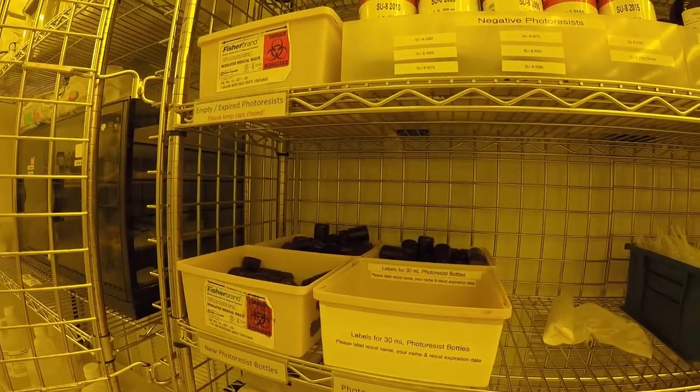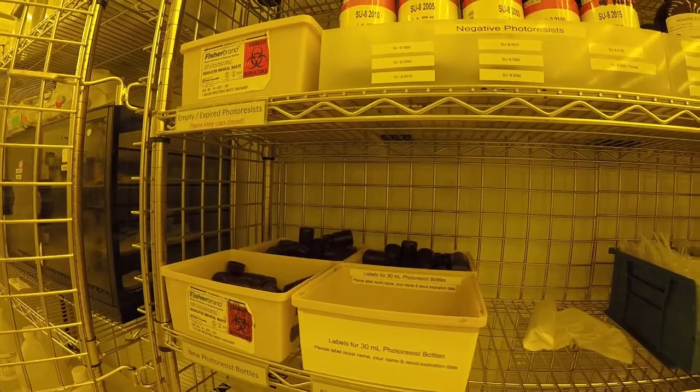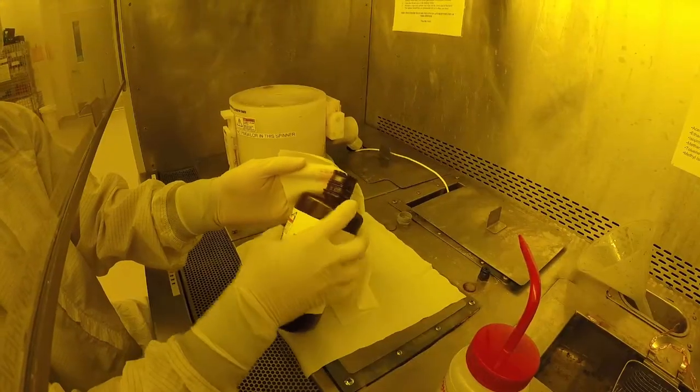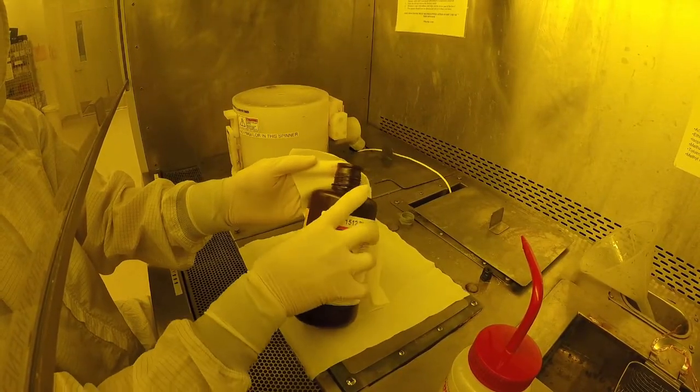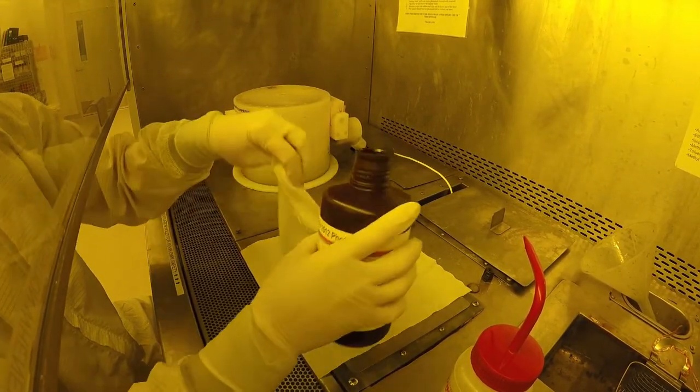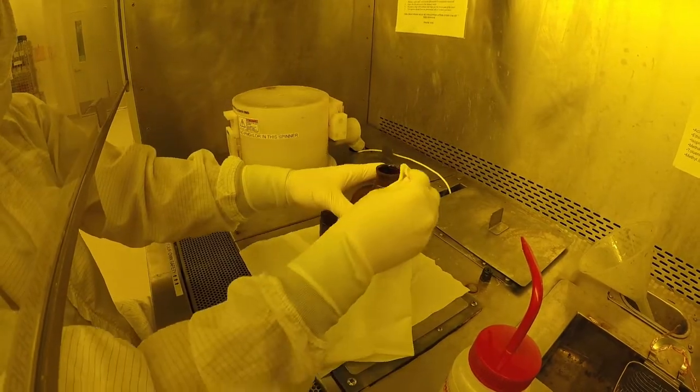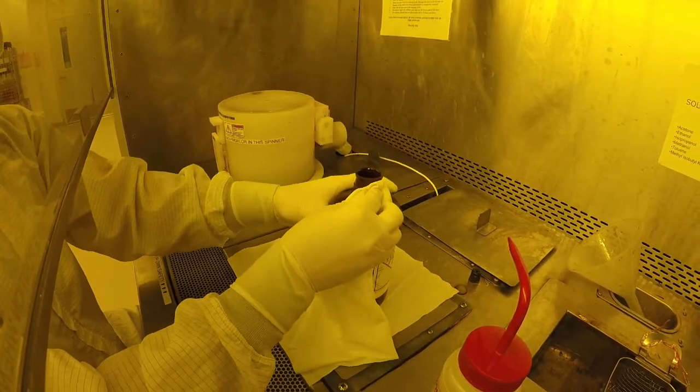First, gather the photoresist bottle of your choice along with the small bottle and label. In a fume hood, open the bulk container of resist and thoroughly clean the bottle cap and neck with acetone on a polyester wipe. Dispose of the wipe in the solid solvent trash.